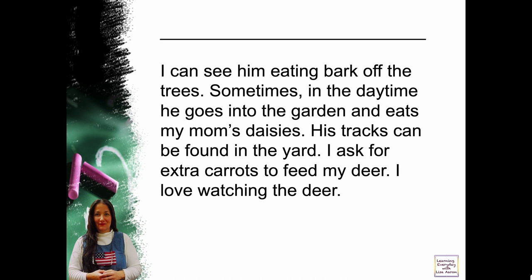Let's look at the deer paragraph: 'I can see him eating bark off the trees. Sometimes in the daytime he goes into the garden and eats my mom's daisies. His tracks can be found in the yard. I ask for extra carrots to feed my deer. I love watching the deer.' The topic sentence would be 'The outside deer is entertaining' — it talks about why the deer is entertaining.